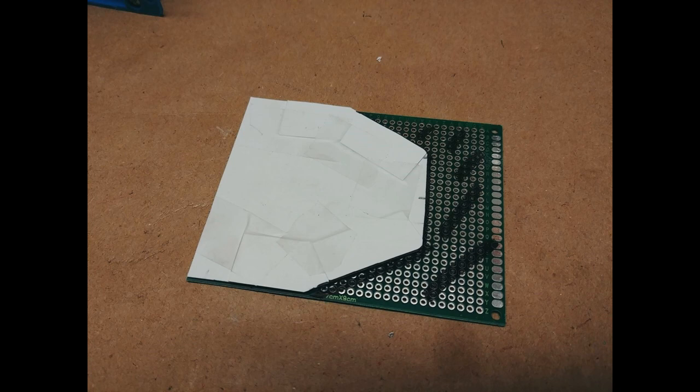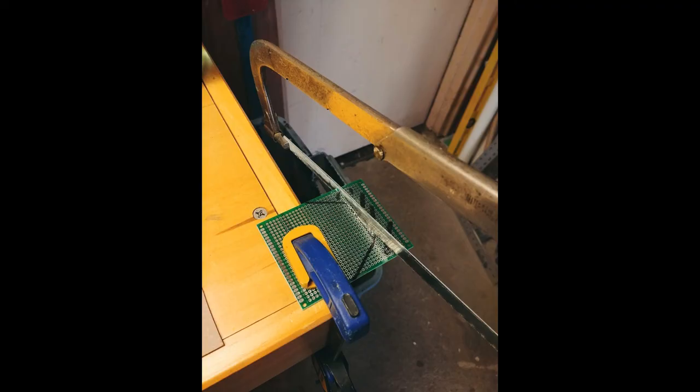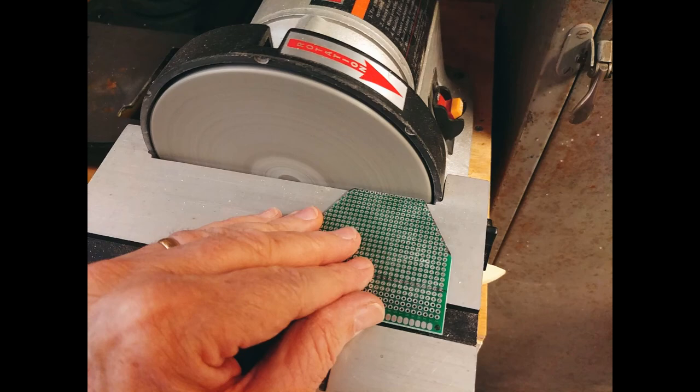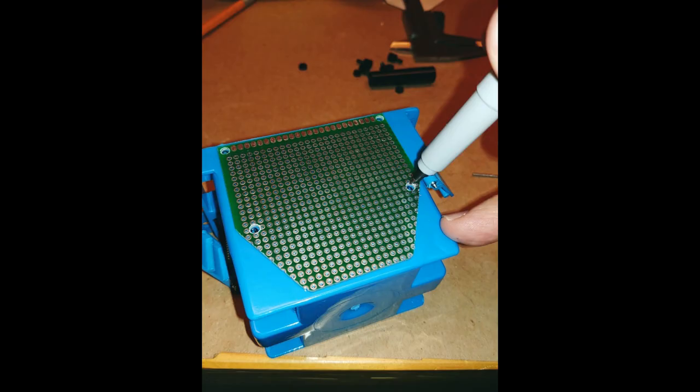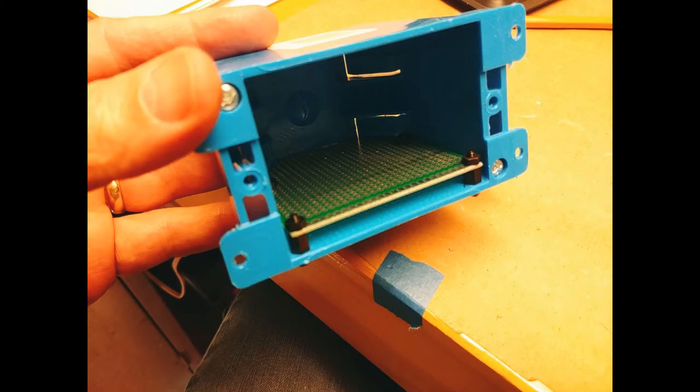To make the board, I printed a one-to-one layout and cut and drilled a blank circuit board to fit. I laid the board on the side of the electrical box and marked the mounting holes from the outside. I used plastic standoffs to mount the board in the box.